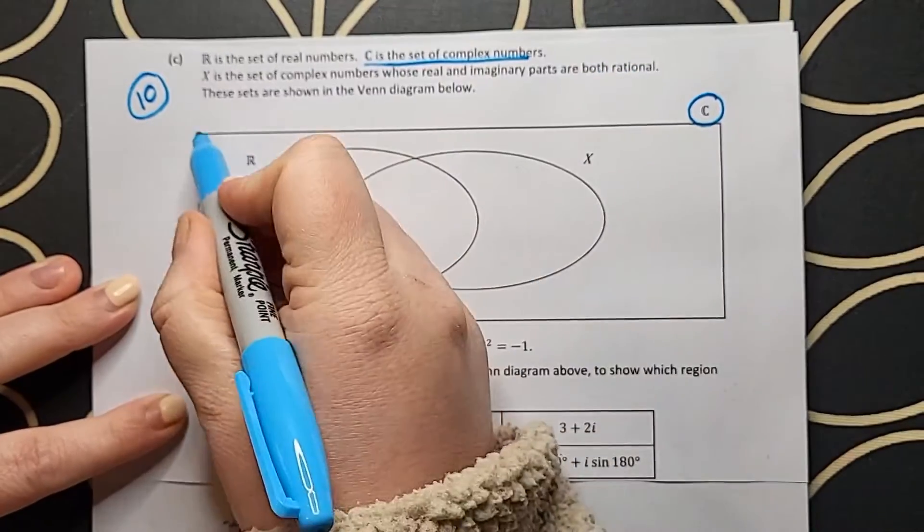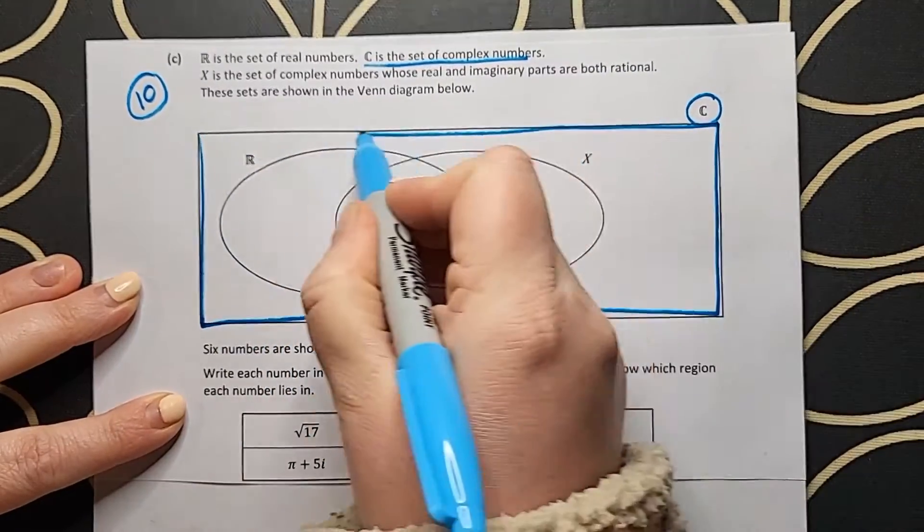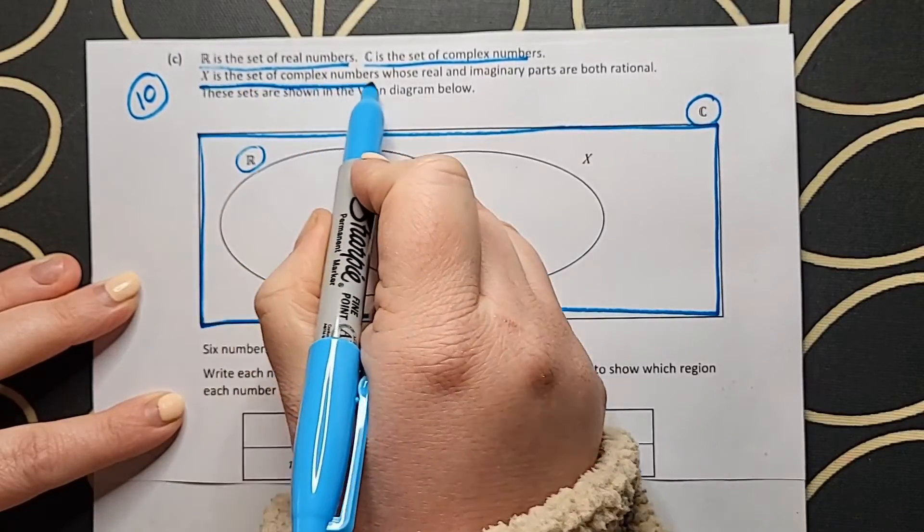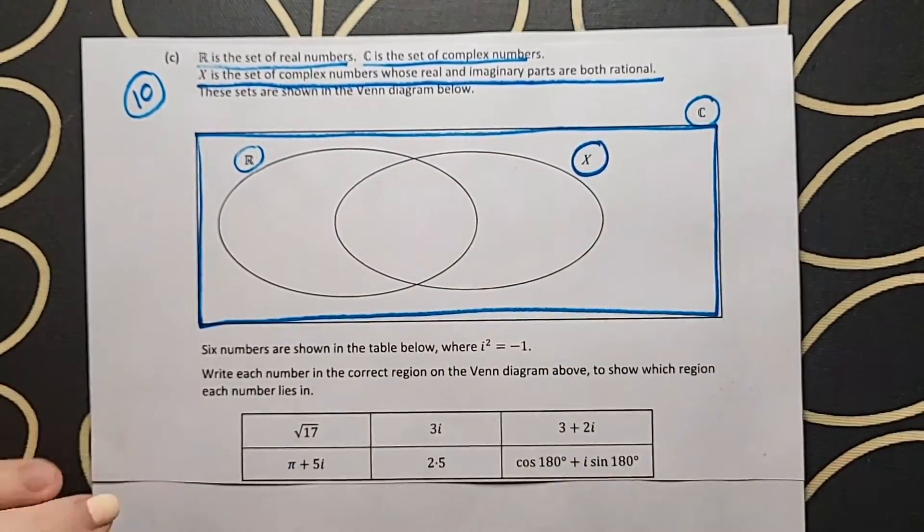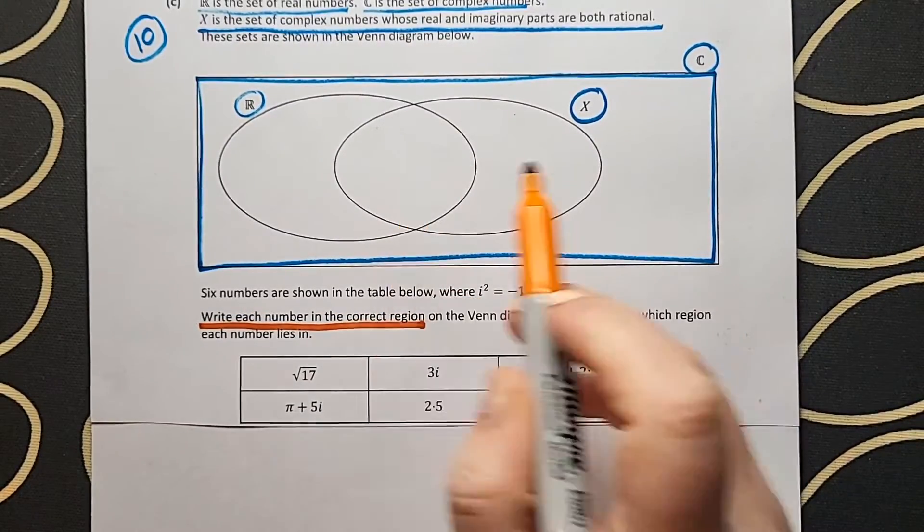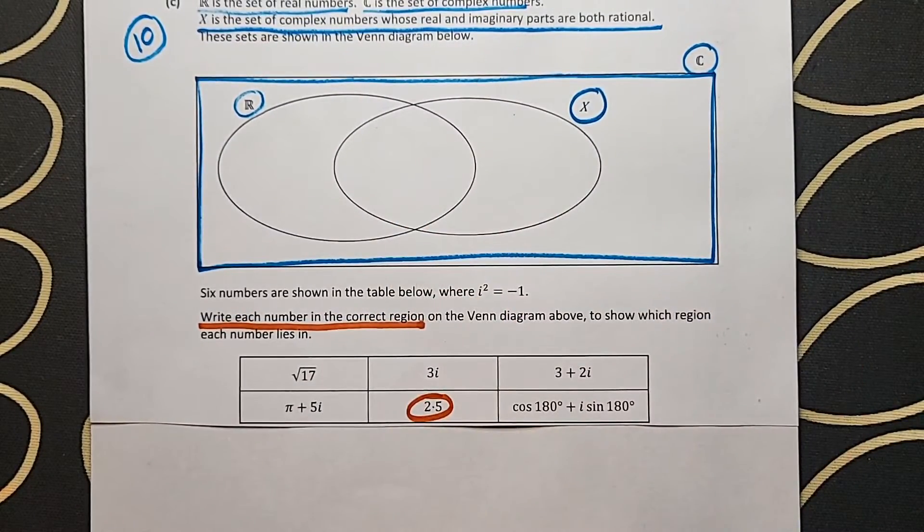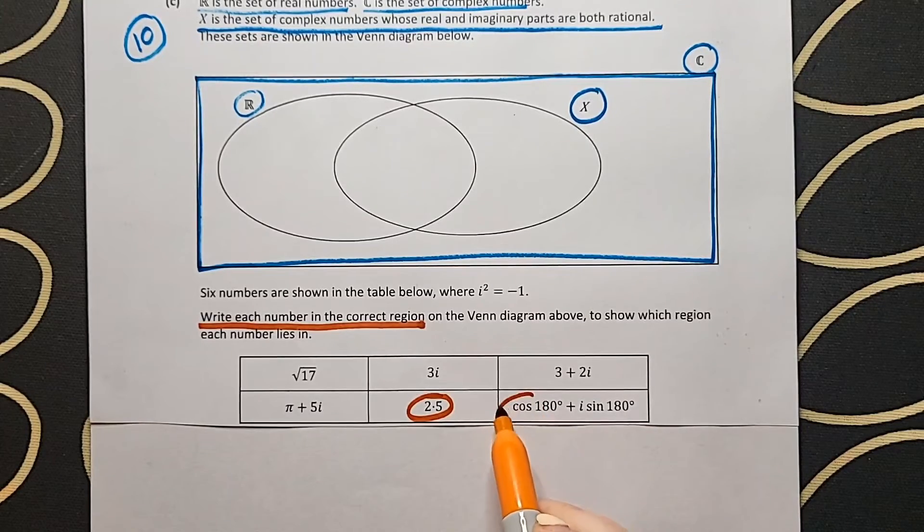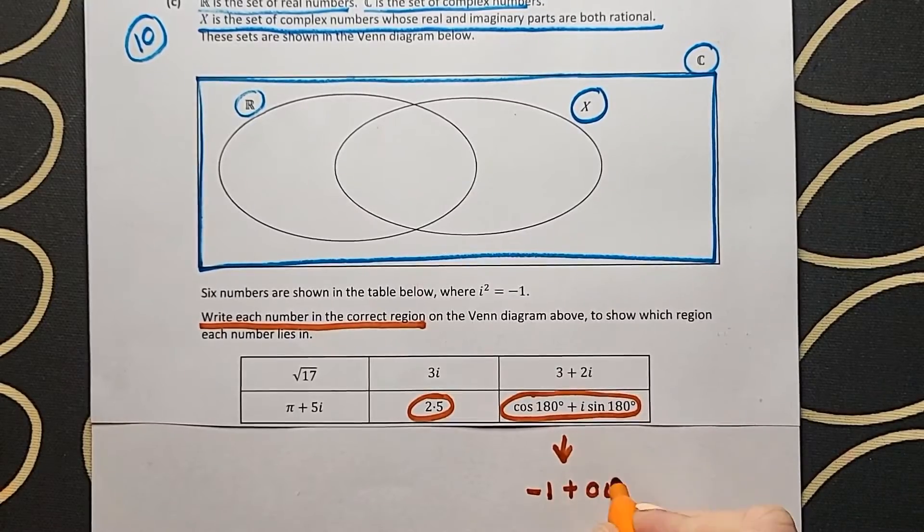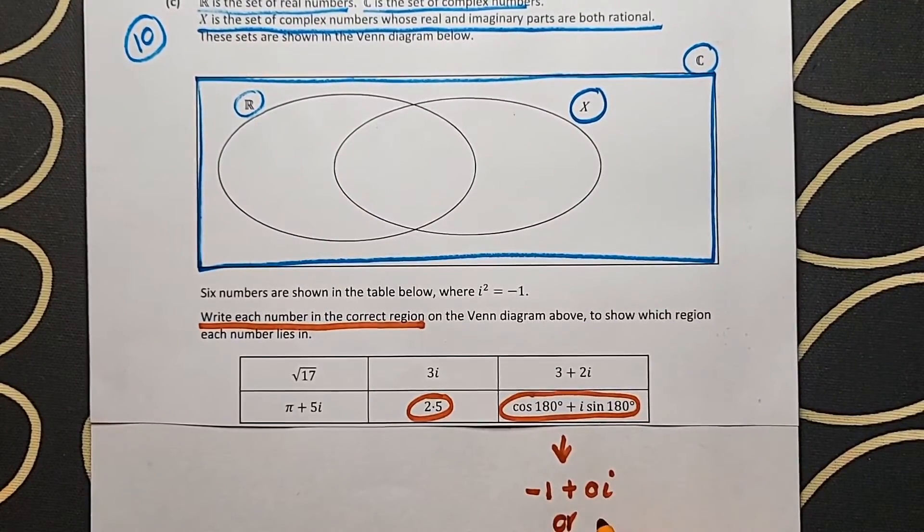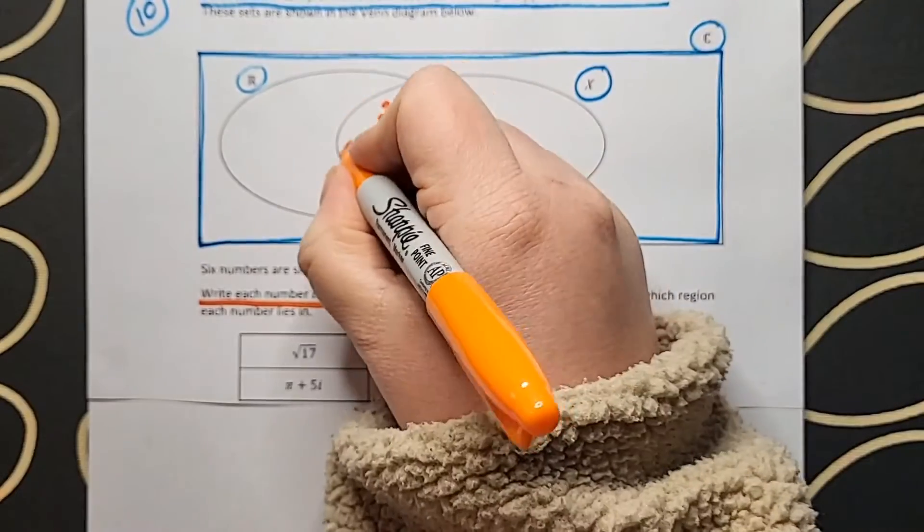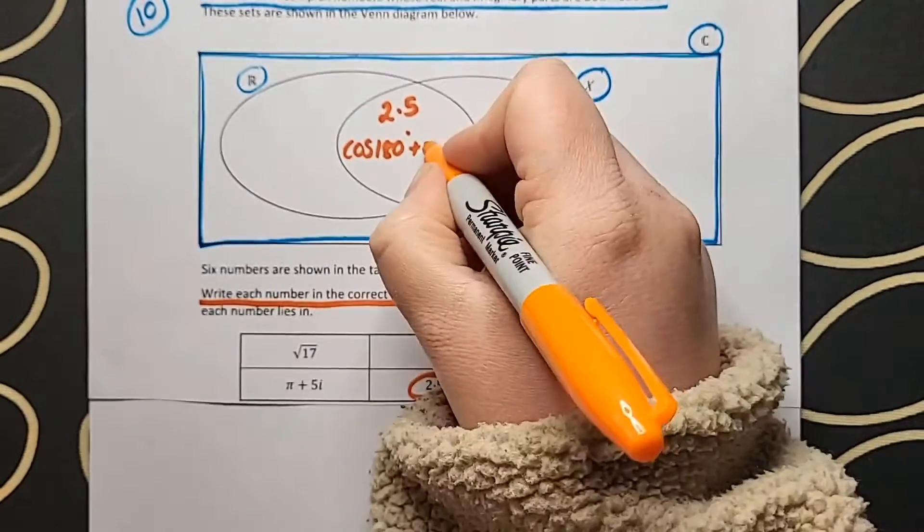There is no reason why set notation can't pop up in several places in the Leaving Cert course, so I'm taking time to understand exactly what each set and each part of my Venn diagram is containing. We always fill in the intersection part first and we're filling that in with 2.5 and cos 180 plus i sin 180. You can see there that I'm working out cos 180 plus i sin 180 as minus 1. They're in the middle because they are both real numbers and both represent complex numbers where both parts are rational.